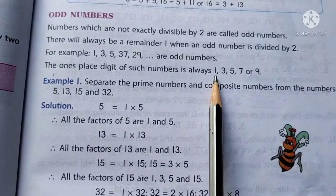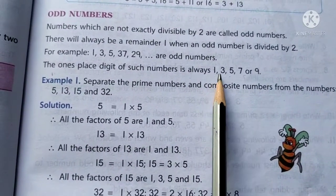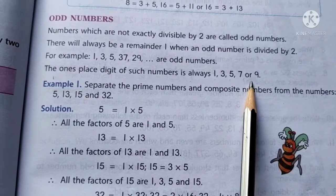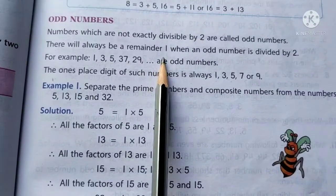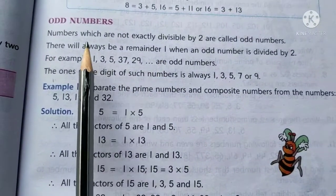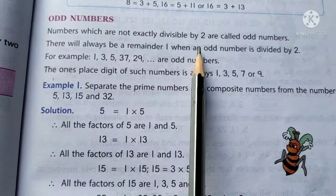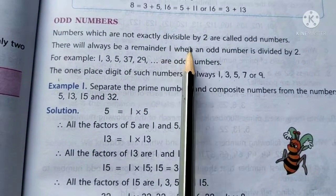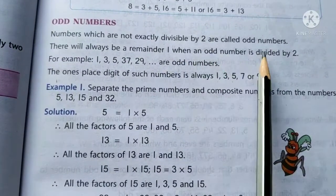Agar koi number odd hai, toh uske once placed per 1, 3, 5, 7 ya 9 ho ga. Aur odd numbers 2 se divide nahin ho ta hai. Wou hemesha remainder mein 1 chhođta hai. So, the numbers which are not exactly divisible by 2 are odd numbers. That is, in a simpler form you can say, they do not form perfect pairs.